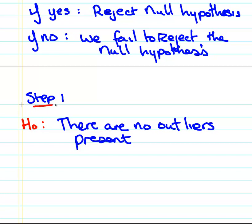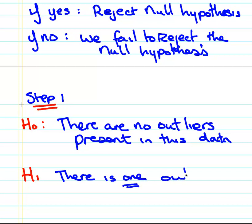Now, in some other examples, you might have to actually write some mathematical notation, but it's not relevant in this case. So we can actually just leave it as that. There are no outliers present in this data. You might rephrase that, but ultimately just getting something along those lines gets the point across.